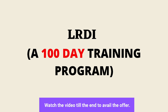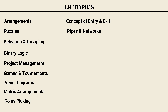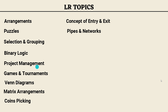Let us look into the LR topics we are going to cover in this course. The first one is arrangements — all types: linear, circular, matrix-based, and everything important for the CAT examination. Then we will look at puzzles — all types — then selection and grouping, then the truth and lie concept which is binary logic, and then project management — all the types of sets that come from project management in the CAT LRDI section.